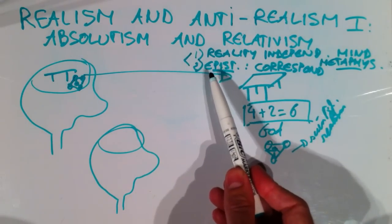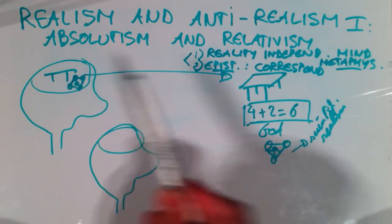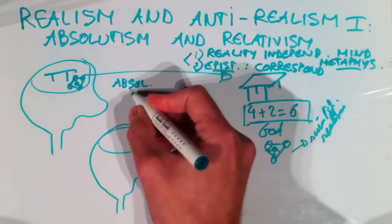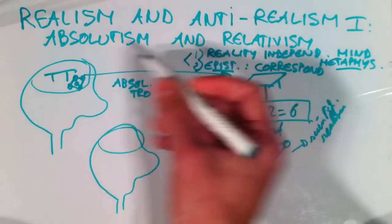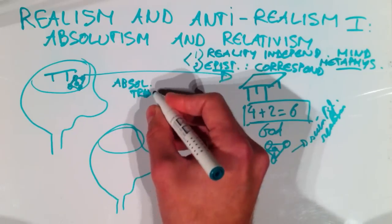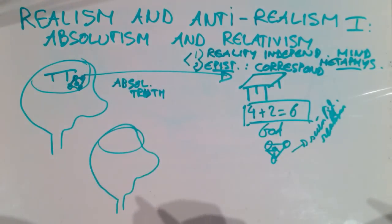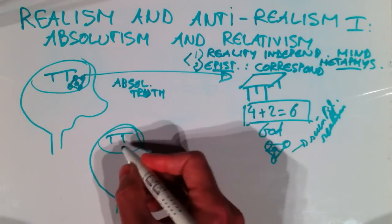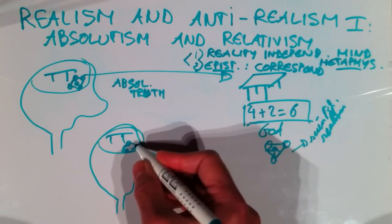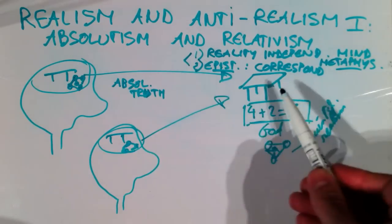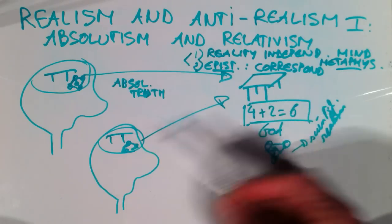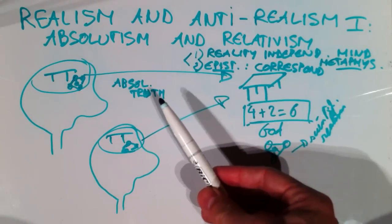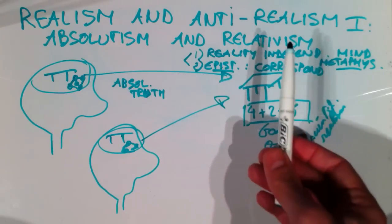If you are an epistemological realist and believe that our thoughts can really have access to this reality, in a sense you believe in absolute truth. You believe that when you think about these particles or about tables, your beliefs are absolutely true. Relativists deny exactly this — absolute truth.